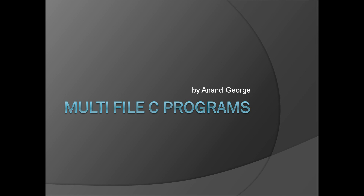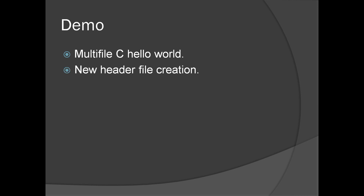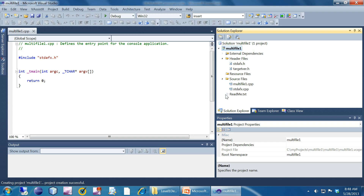In this presentation we will discuss multi-file C programs. So far we were seeing programs which had only a single file because the programs were small. When the source code base gets larger, we have to divide that source code into multiple files. This is for keeping modularity and to manage the source code easily, as most real-world programs contain more than one source file.